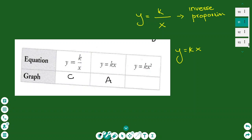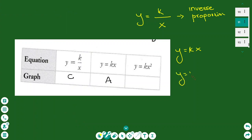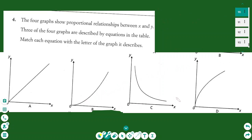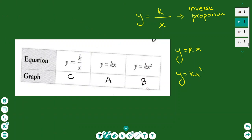For Y equals KX squared: if I increase X, Y increases by more than the change in X. X-squared graphs are described by parabolas. The only parabola visible here is graph B — it's one part of the parabola, without the negative part, because X cannot take negative values. So the answer is graph B.